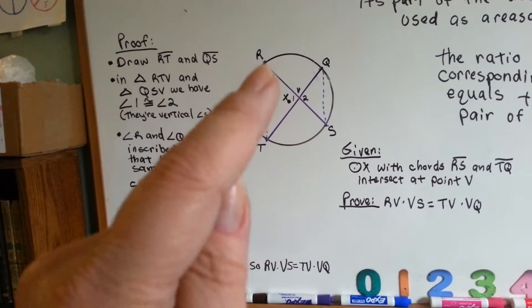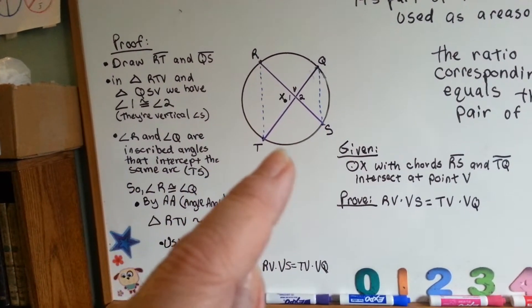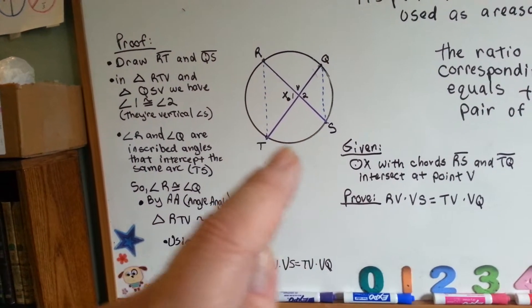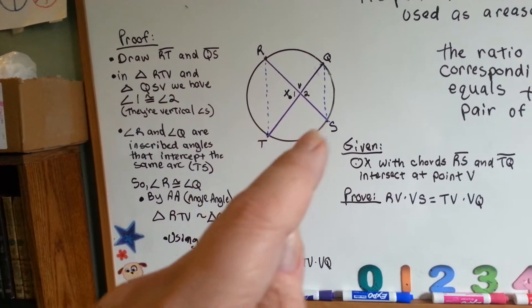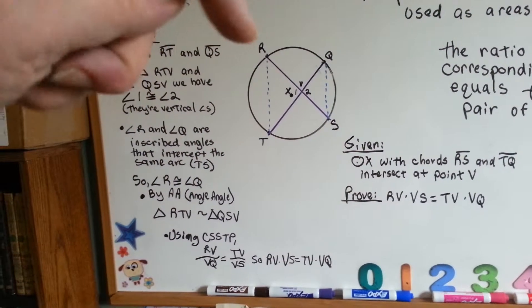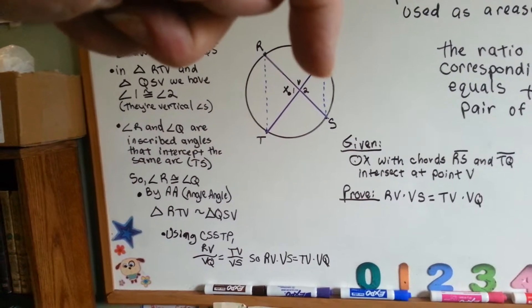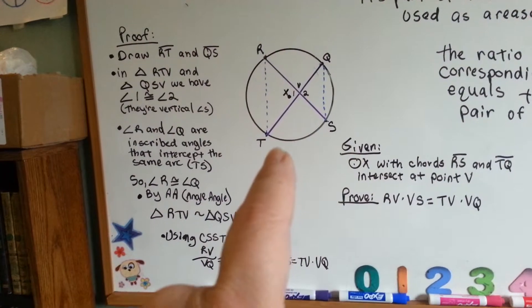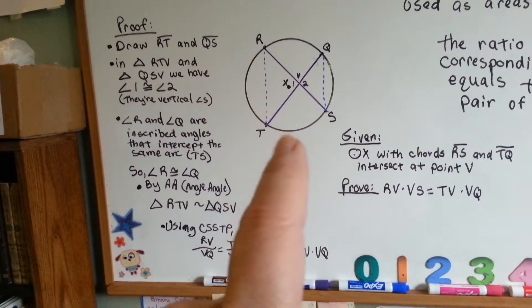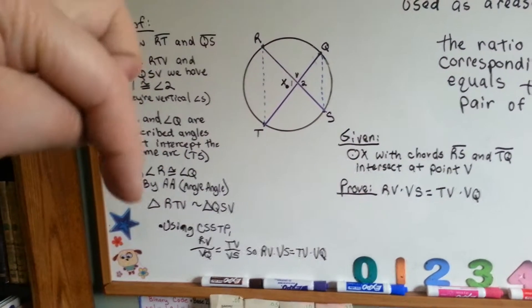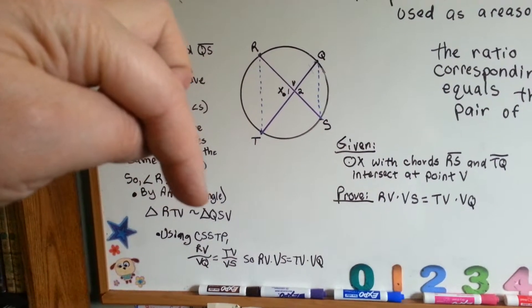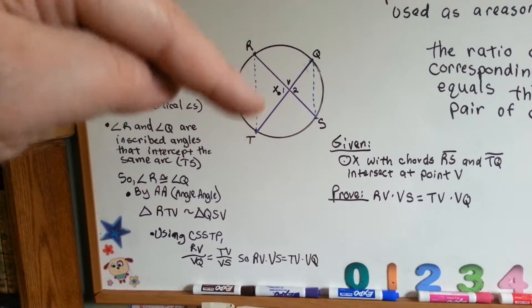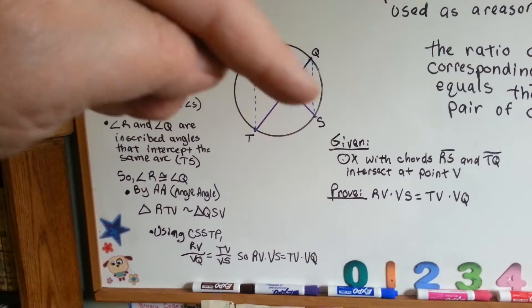So, angle R and angle Q intercept at TS, right here. The same arc. So, angle R is congruent to angle Q. By the reasoning of angle angle, triangle RTV is similar to QSV, RTV QSV.